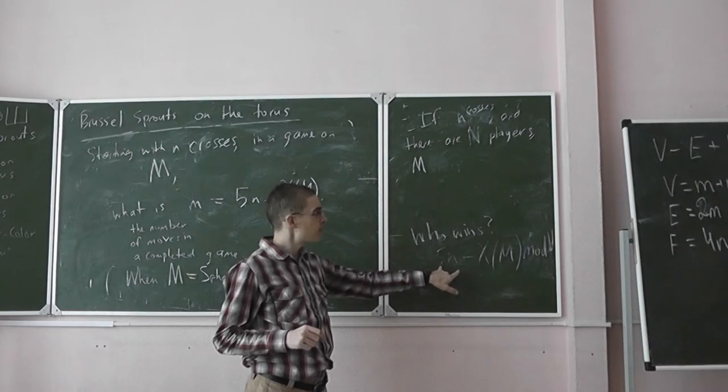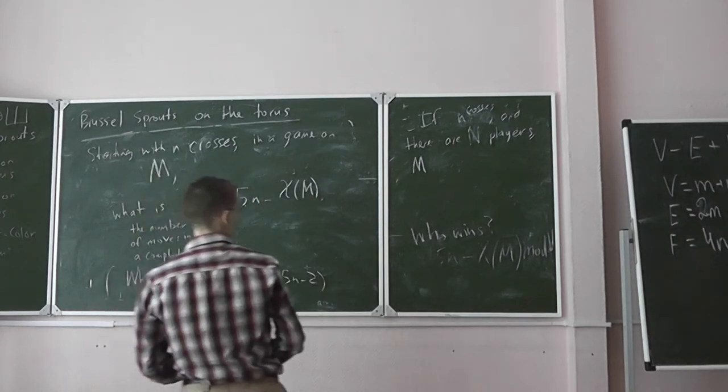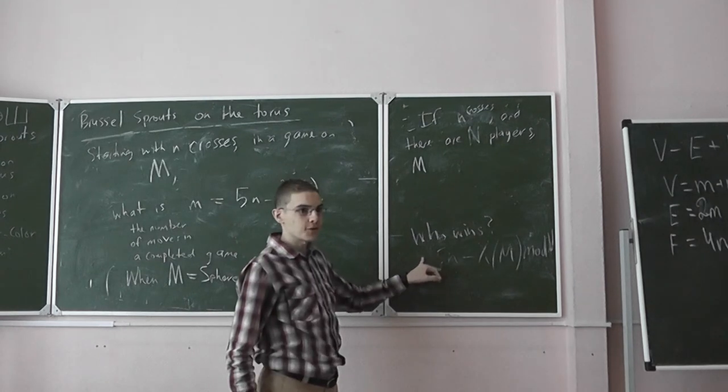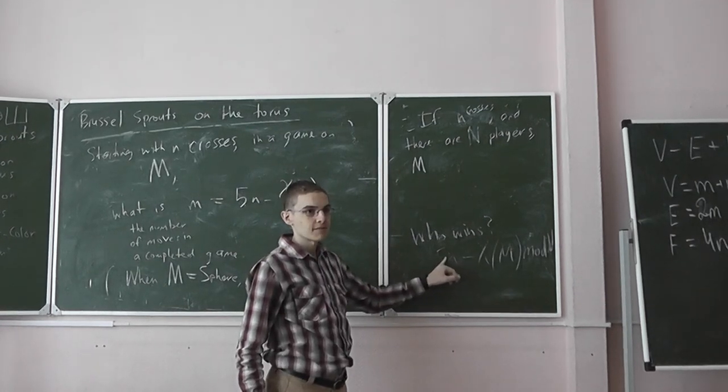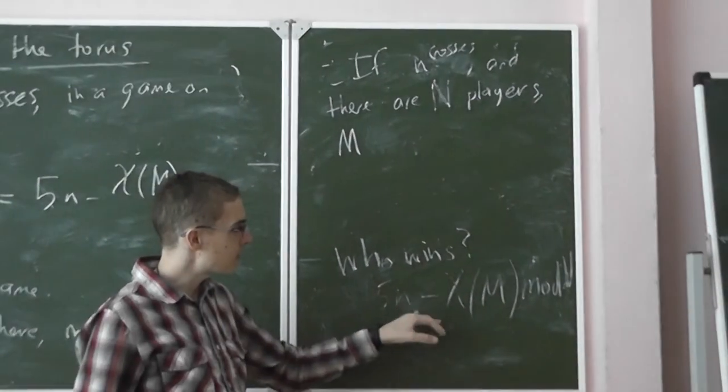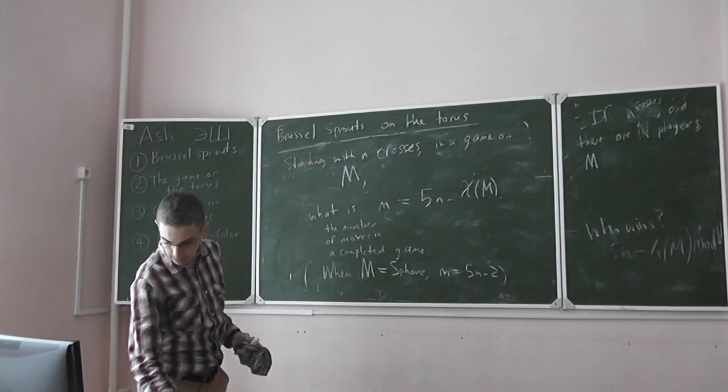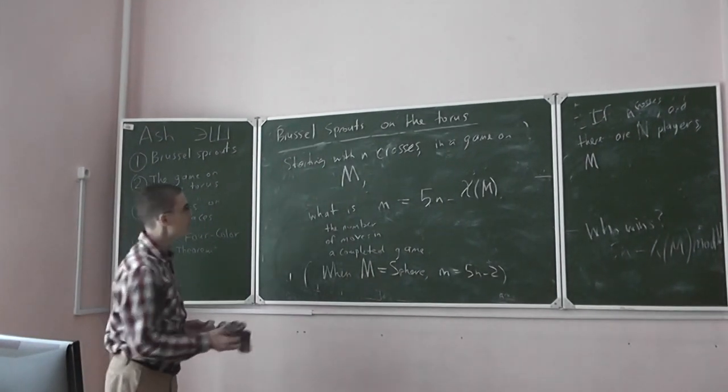So, if you're player p, think of the modulo going around a circle. Your turn comes on this number if your number is equal to that mod n. Okay.